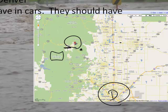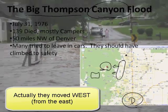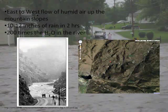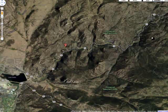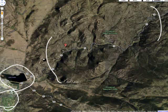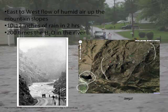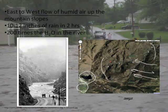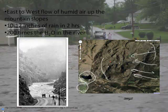I found a website with a list of every person who died — all 139. What happened was thunderstorms developed over the plains and started to move east, dumping rain after rain after rain. The amount of rain is just unbelievable. They had this east-to-west flow of humid air up the mountain slopes. Here on this Google Maps image, you can see Lake Estes and the town of Estes Park. There's a road that follows this canyon, and this is where they got 10 to 12 inches of rain in two hours — 10 to 12 inches in two hours. This humid air flowed up the hill, got stopped by the mountain, and dropped 10 to 12 inches. The river essentially had 200 times the amount of water it normally expects.